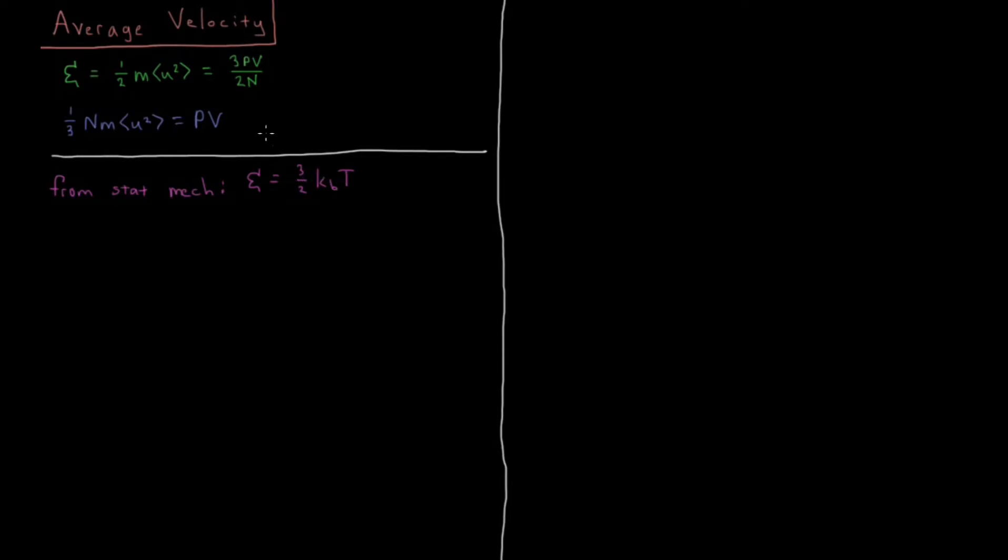So from StatMech the average kinetic energy of an ideal gas particle is three halves k_B T. And from the kinetic theory of gases we have that that value is going to equal three times pressure times volume over two times number of particles. But we can take some of these equations and then set them equal to each other. So we are going to have our one half M average u squared is going to equal three halves k_B T.